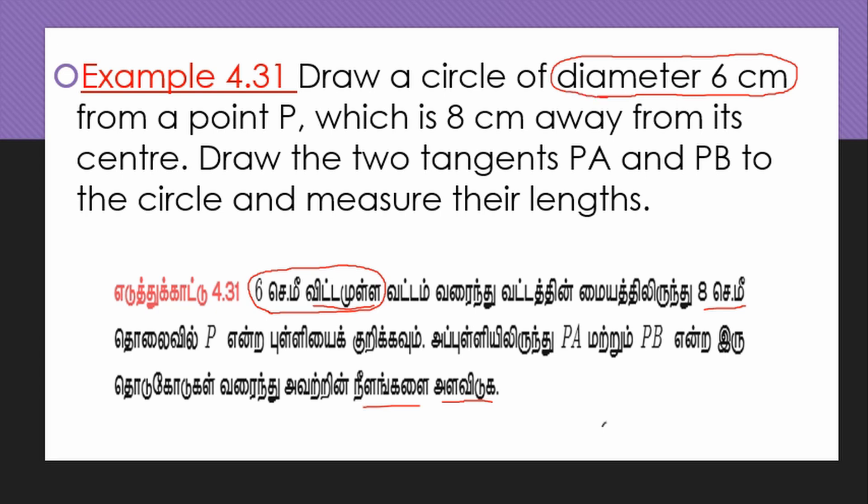From your point P, which is 8 cm away from its center, draw the two tangents PA and PB to the circle and measure their length.